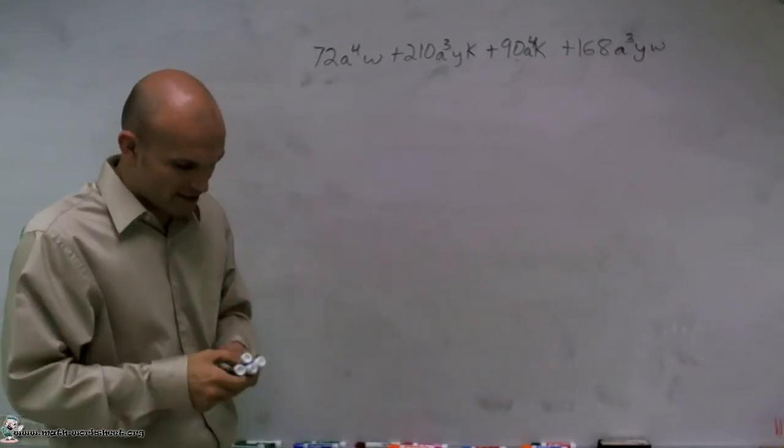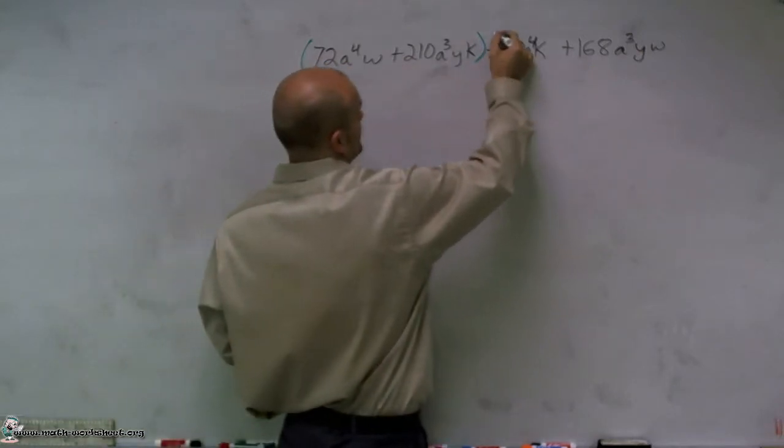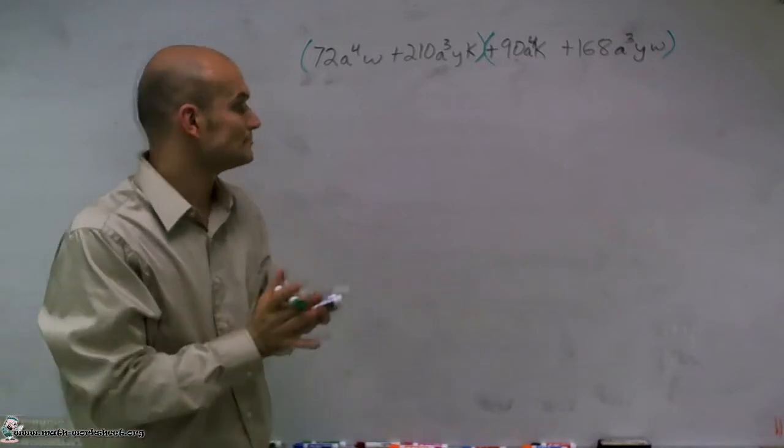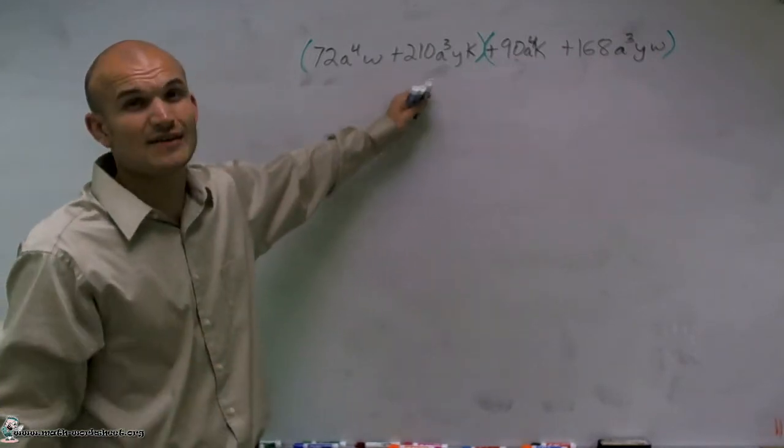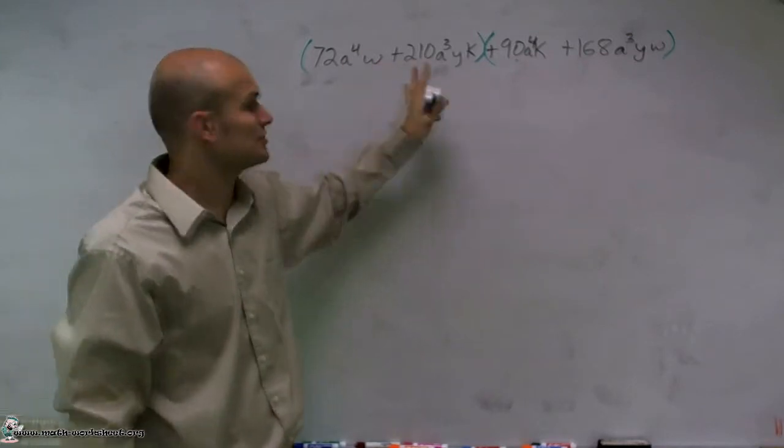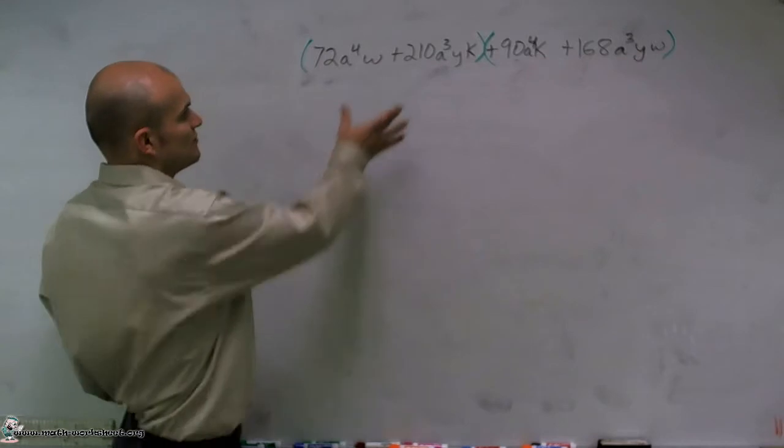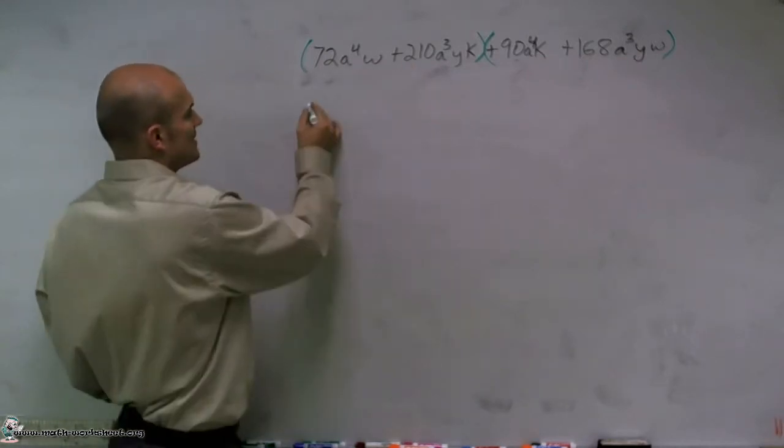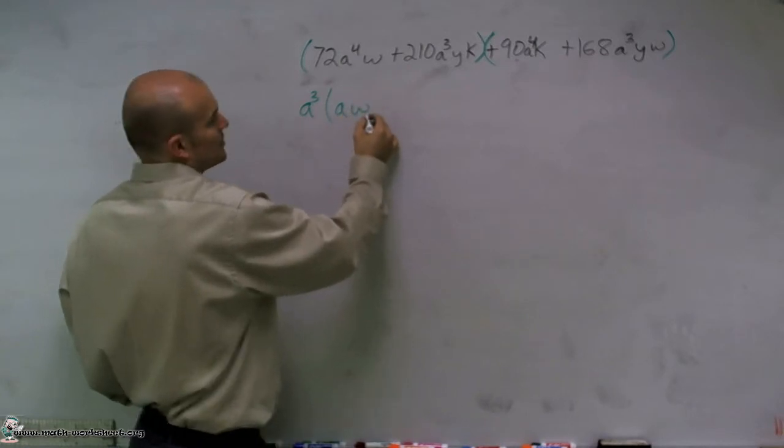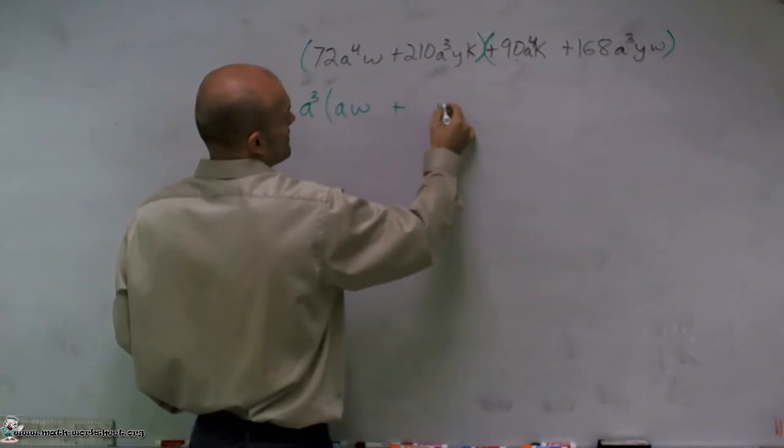When we're factoring by grouping, the first thing we always want to do is group our first two terms and see what we're going to get. Out of your two terms when you're grouping, you want to factor the GCF out of the first two terms. Numbers aside, when you look at this, if I was going to factor out my variables, I'm going to have to factor out an a cubed. And being left over would be an aw, and over here, whatever my number is, plus I'll have a yk.